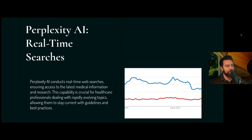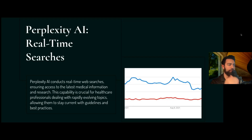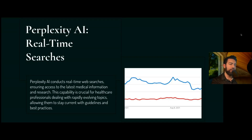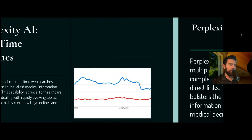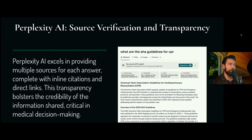Imagine Perplexity AI is represented by a blue line — that blue line means it's able to access real-time web searches and provide all the crucial sources you need for rapidly evolving topics, keeping you current on guidelines. That red line could represent ChatGPT's knowledge. For example, if you look for AHA guidelines for CPR in Perplexity, you'll see what this comparison looks like.